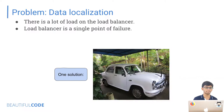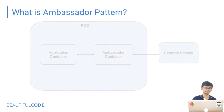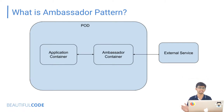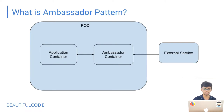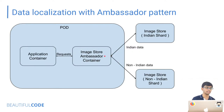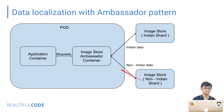One possible solution is the ambassador pattern. Here, an ambassador container is co-located with your application container and proxies all requests being made to an external service. Your application container calls the ambassador container via localhost, and the ambassador container calls the external service, processes the request, gets the response, and returns it to your application container. The ambassador container handles all the processing. In our case, we can have an image store ambassador container with the logic to redirect requests to the Indian shard or non-Indian shard based on the user.